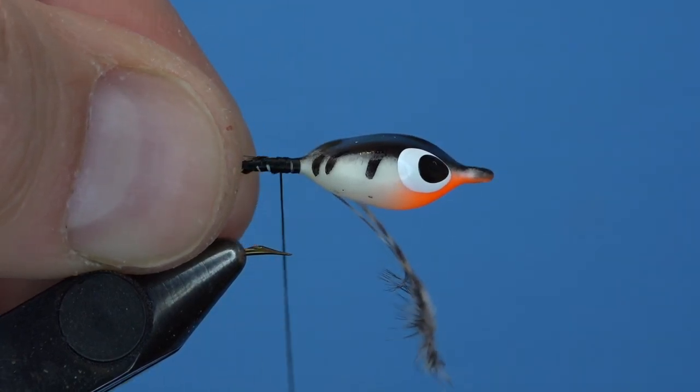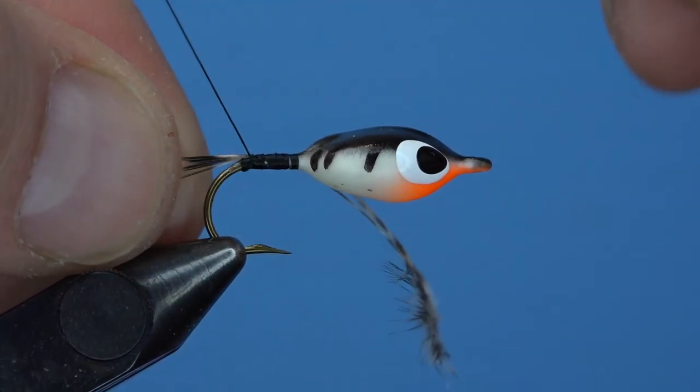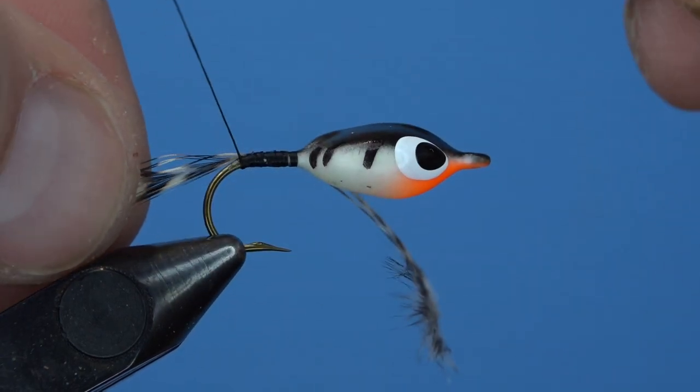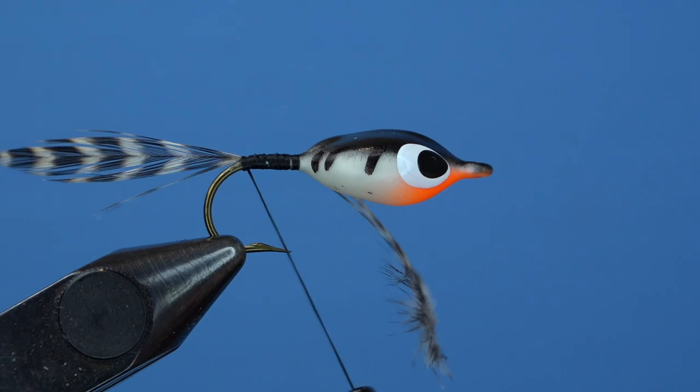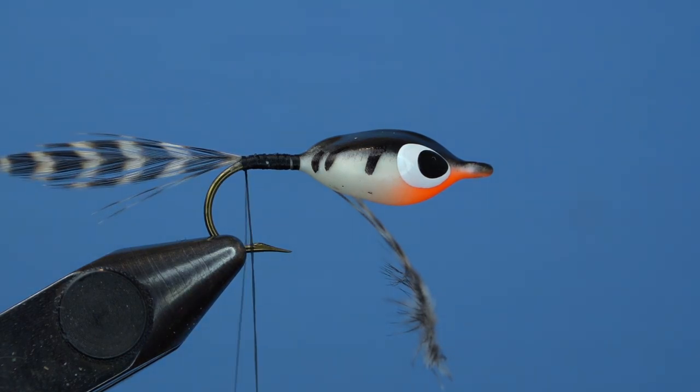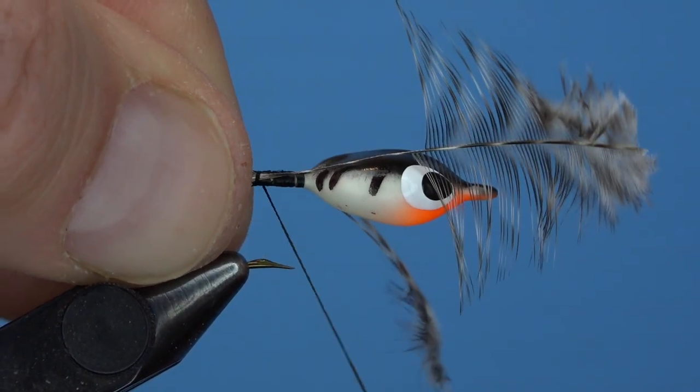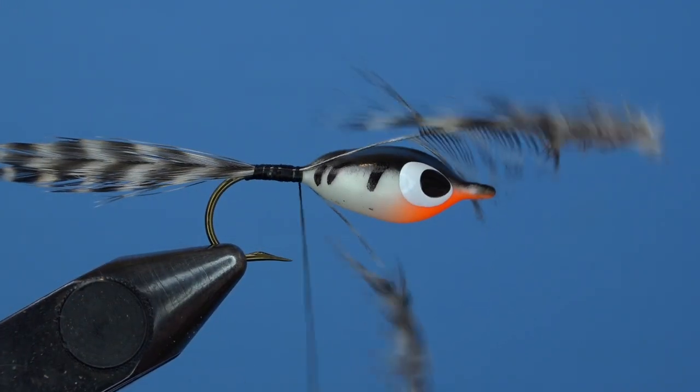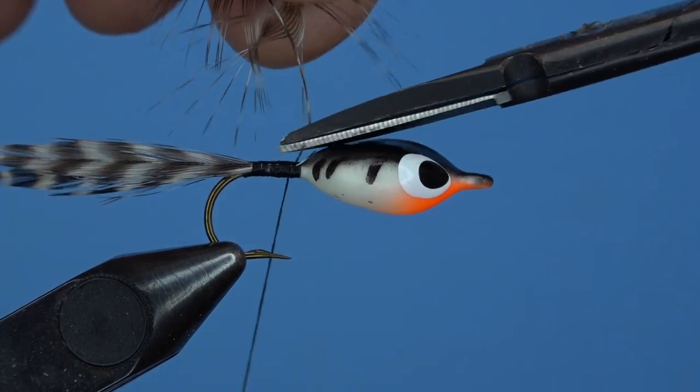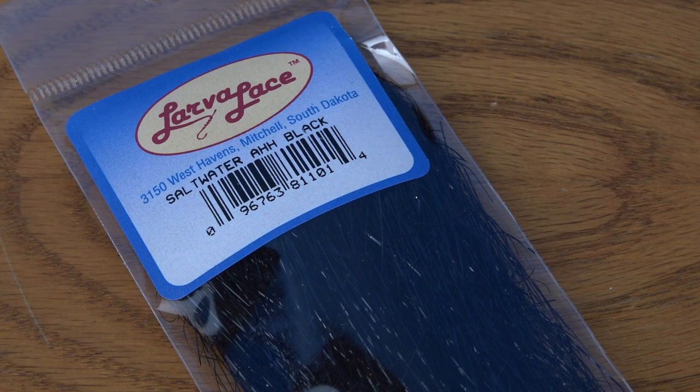Panfish bugs certainly do not have to be clean by any means, so if it works better for you to leave these fibers on and tie in the whole feather, that's fine. I'm going to tie in the feather on the opposite side of the hook first, just making sure that the stem and the feather stay on the side of the hook and that the curvature of the feather bends away from me. Then I'll tie in the feather closest to me before trimming off the excess stem pieces.